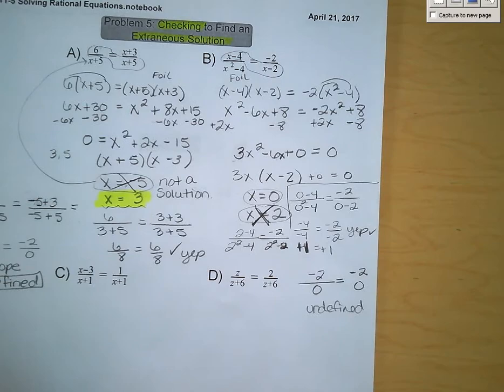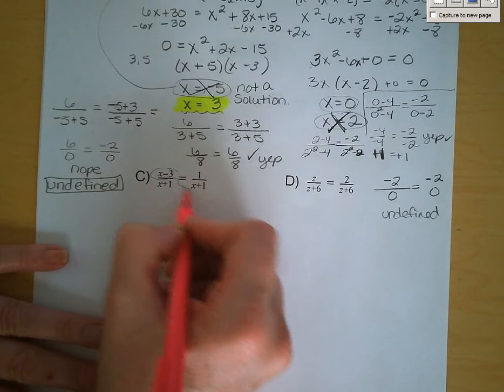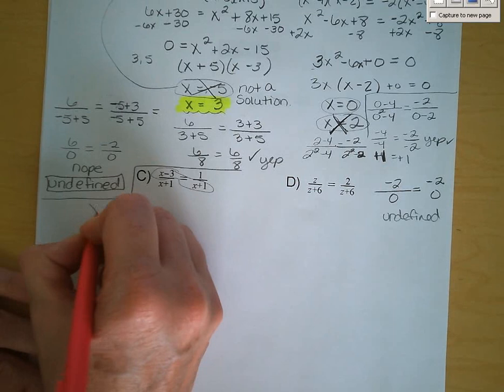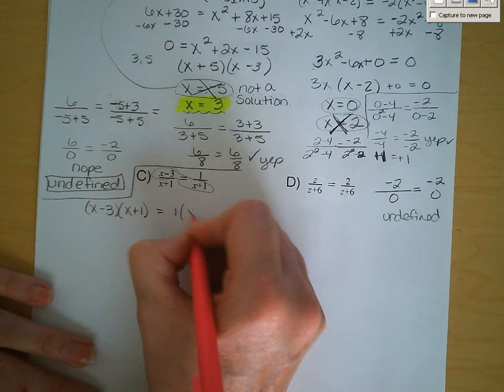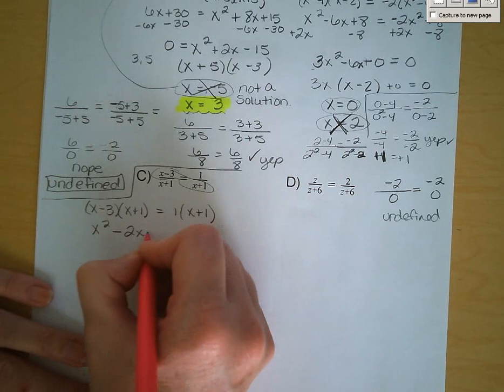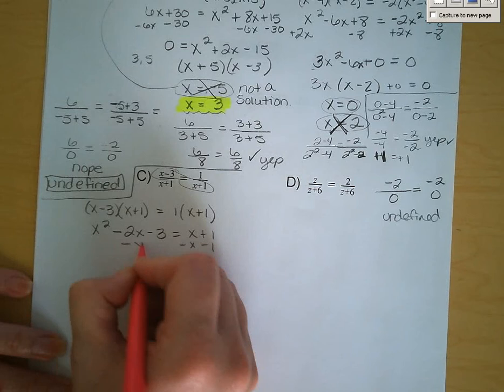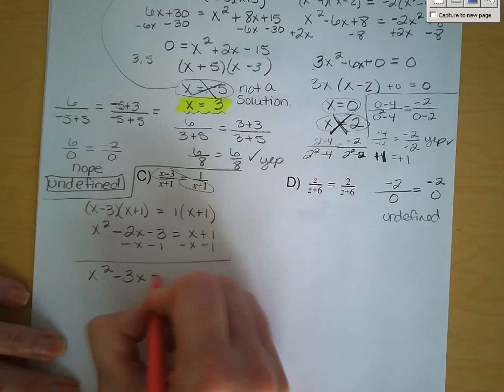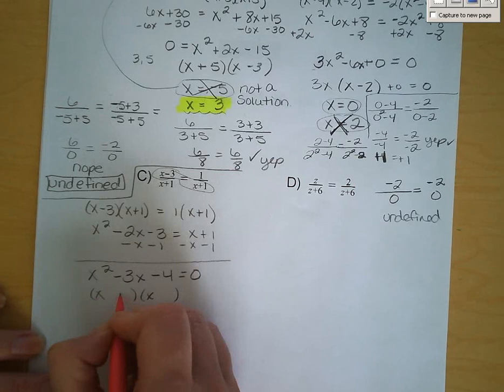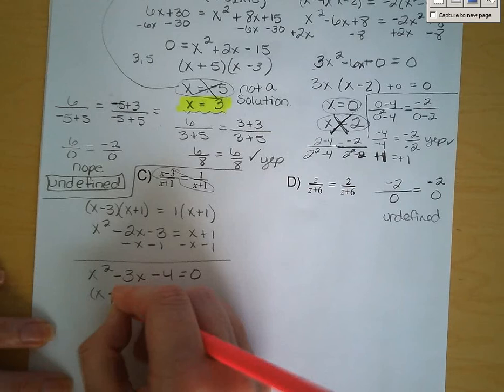Letter c — cross multiply again. We've got x minus 3 times the quantity x plus 1 is equal to 1 times the quantity x plus 1. FOIL: x squared minus 2x minus 3 is equal to x plus 1. Subtract x and subtract 1 from both sides: x squared minus 3x minus 4 is equal to 0. Factor — looking for products of negative 4 that add up to negative 3: negative 4 and positive 1. Our two solutions are x equals 4 and x equals negative 1.